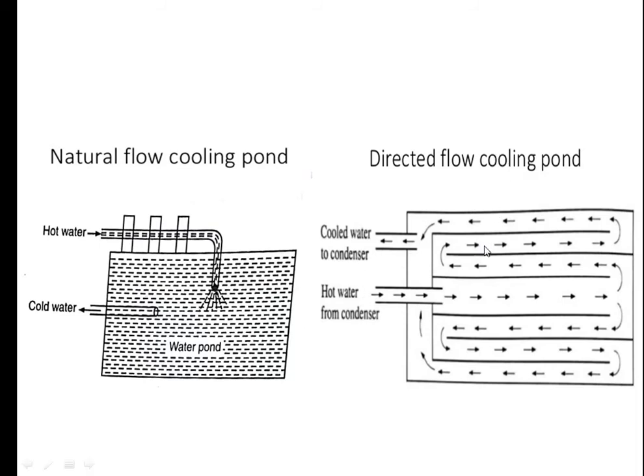In the directed flow cooling system, direction is provided by using baffles. Here we can see the partitions known as baffles. As the hot water flows inside, the baffles give direction to the water and the water flows accordingly. At last, we can see that the cold water is poured out through the outlet to the condenser.